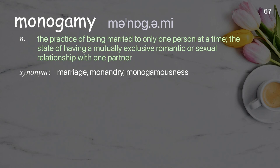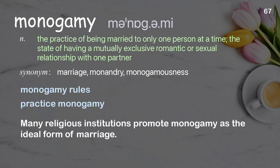Monogamy: the practice of being married to only one person at a time; the state of having a mutually exclusive romantic or sexual relationship with one partner. Examples: monogamy rules, practice monogamy. Many religious institutions promote monogamy as the ideal form of marriage.